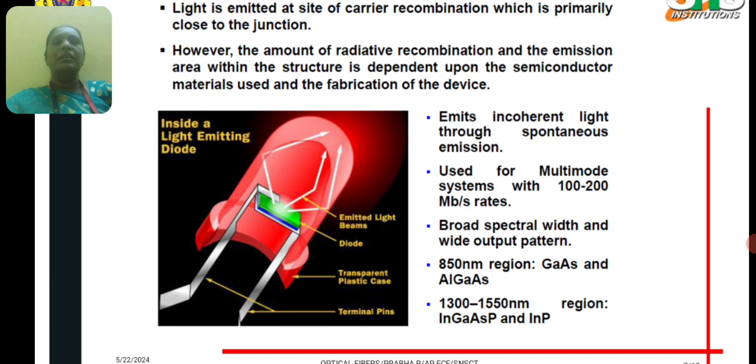It has a broader spectral width and wide output pattern. It can work at 850 nanometer region with gallium arsenide and aluminium gallium arsenide. And between 1300 to 1550 nanometer region, the materials used are Indium gallium arsenide phosphorus and Indium phosphorus.